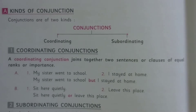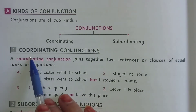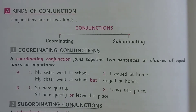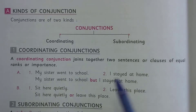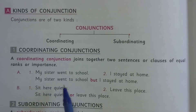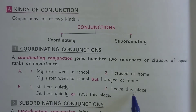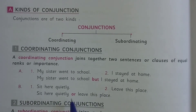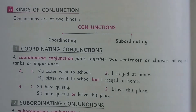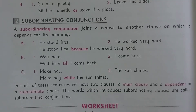Conjunctions are of two kinds: coordinating conjunctions and subordinating conjunctions. Coordinating conjunctions join together two sentences or clauses of equal rank or importance. For example: 'My sister went to school' and 'I stayed at home' — both sentences are of equal importance, and we can join them with 'but': 'My sister went to school but I stayed at home.' Similarly, 'Sit here quietly or leave this place.' Such conjunctions are called coordinating conjunctions.